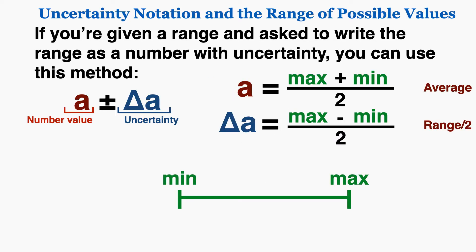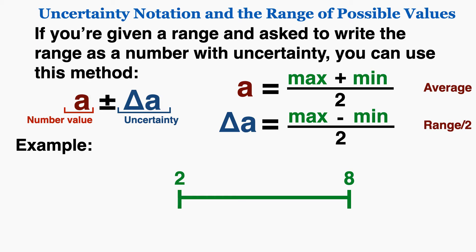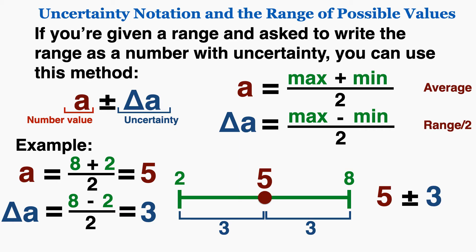If you're given a range and asked to write it as a number with uncertainty, the number value equals the max plus the min of the range divided by 2 — this is also the average of the range. The uncertainty equals the max minus the min divided by 2, which is the range divided by 2. For example, for a range from 2 to 8, the number value is the average of 8 and 2, which equals 5, and the uncertainty is (8 minus 2) divided by 2, which equals 3. So that range can be written as 5 plus or minus 3.